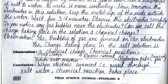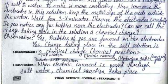Observation: Yes, bubbles of gas are formed on the electrodes, and the change taking place in the salt solution is a chemical change. The chemical reaction is: dilute salt solution (tap water) in the presence of electric current gives hydrogen gas plus oxygen gas.